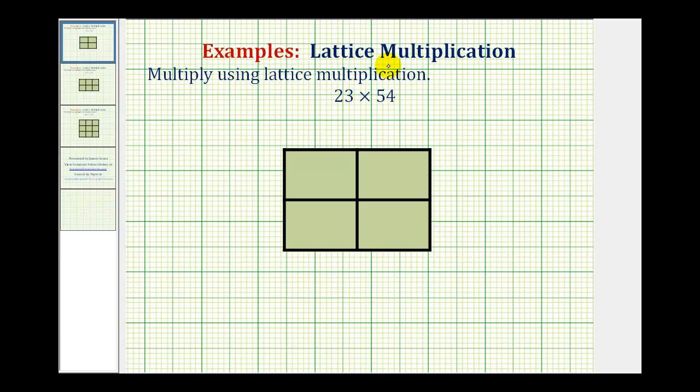Welcome to a lesson on lattice multiplication, which is an alternative method for multiplying whole numbers. We'll start with 23 times 54.